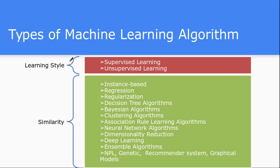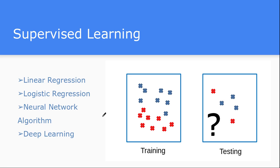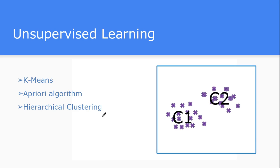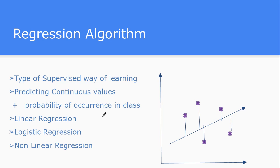From this lecture onward we are going to discuss individual similarity-based algorithms. In this lecture we are going to learn about the decision tree algorithm, regression algorithms, association rule mining algorithm, and others. Similarity-based algorithms will be covered in subsequent lectures. Let's start with the individual regression algorithm, which is a supervised learning algorithm.